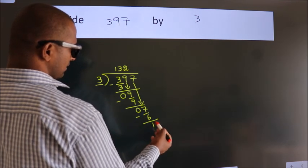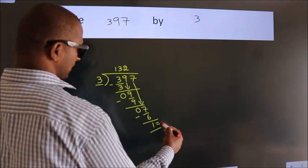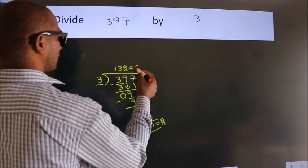After this, no more numbers to bring it down. So, we stop here. This is our remainder. This is our quotient.